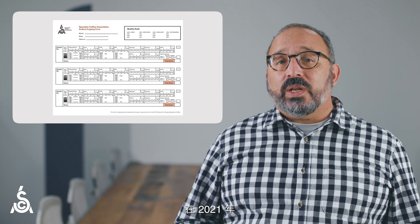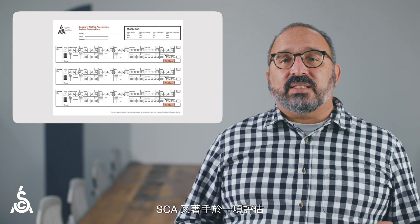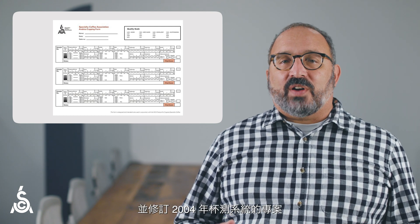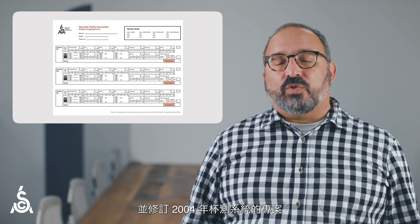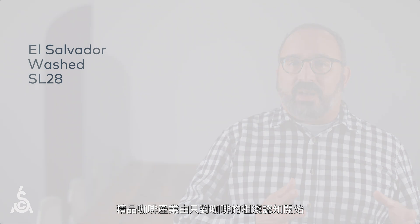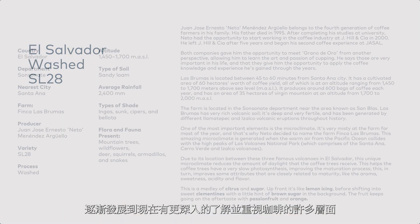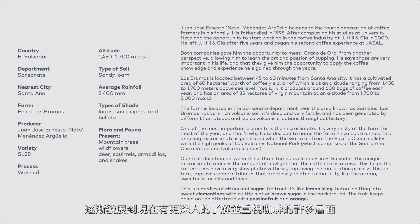In 2021, the SCA embarked on a project to evaluate and revise the 2004 cupping system. So we began our research. And in our research, we learned that the specialty coffee industry had gone from knowing just a few things about a coffee to knowing and valuing many things about a coffee.